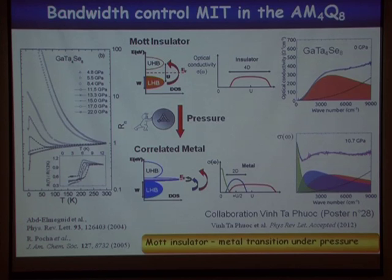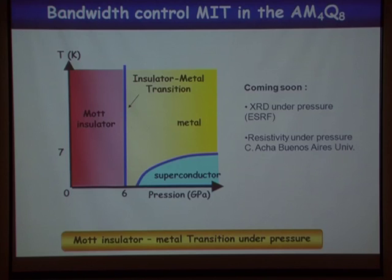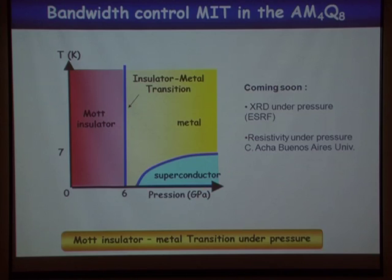We can sketch the temperature-pressure phase diagram of our system. The Mott insulator phase is stable up to 6 GPa. Above this pressure, there is a metallic phase, and at low temperature there is a superconducting transition at about 6–7 K. We are currently doing XRD and resistivity measurements under pressure with Carlos Sáchez here in Buenos Aires to fully understand this phase diagram.